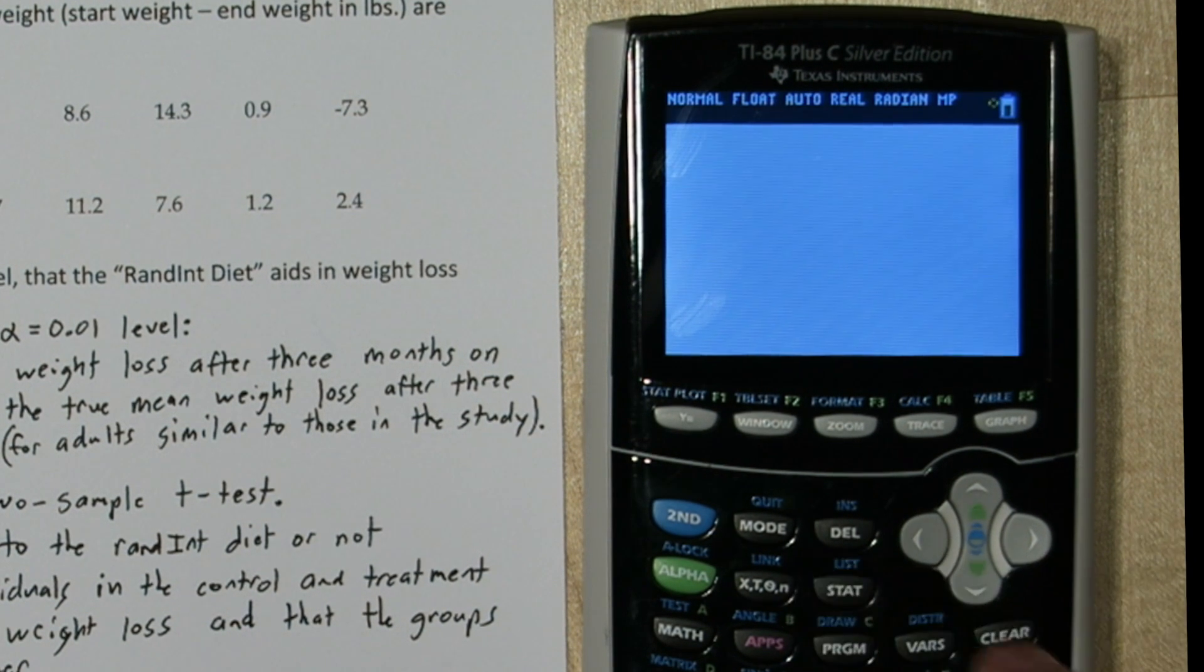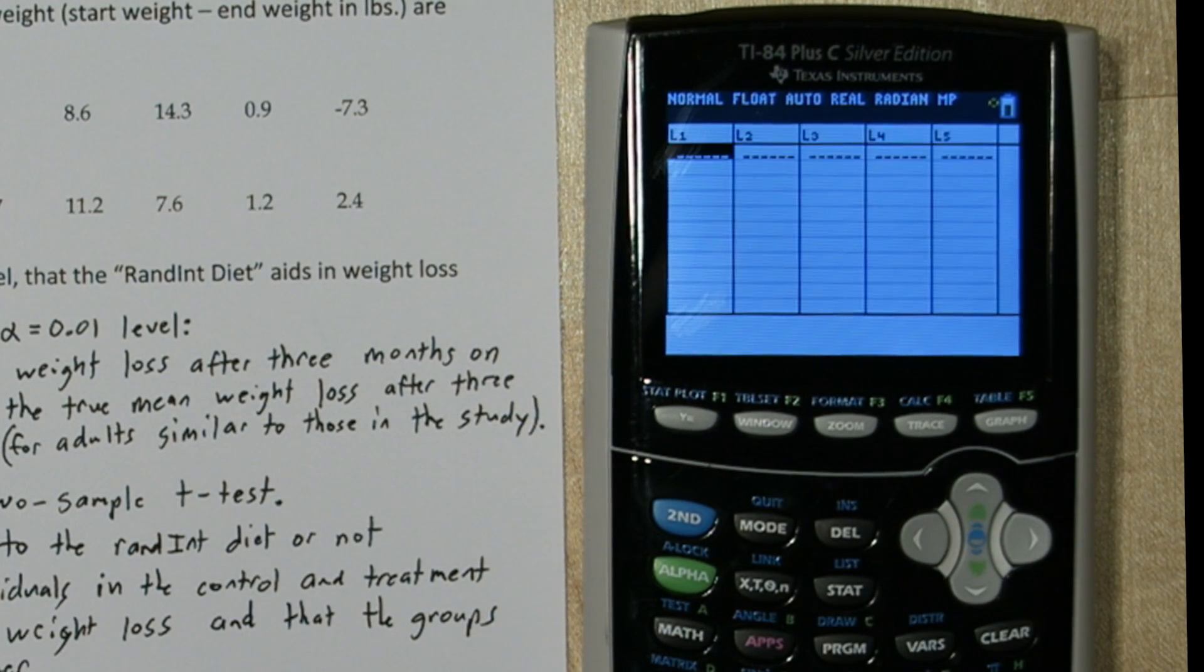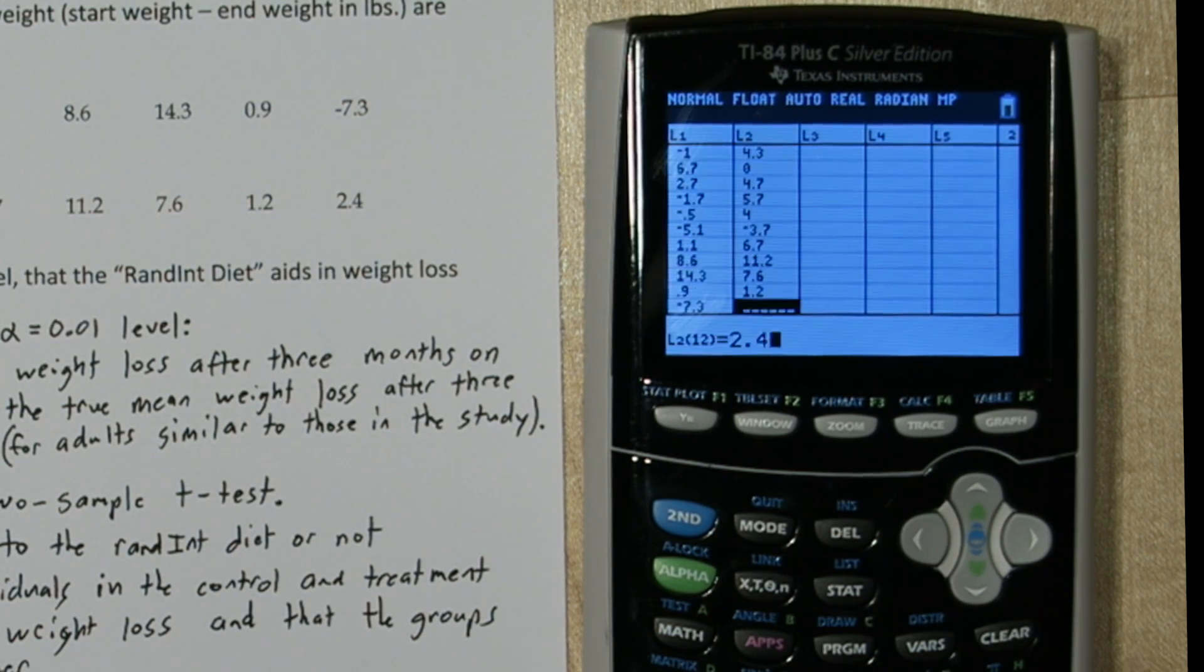To do this, press the STAT button, and then press ENTER. These are our lists, and we're going to put the control group weight losses into list 1. And we'll put the treatment group weight losses into list 2.